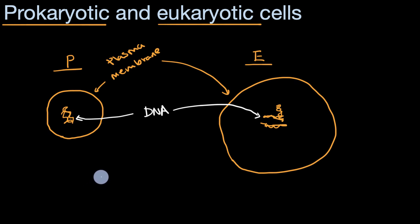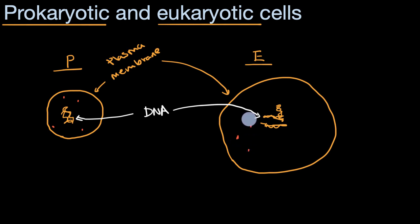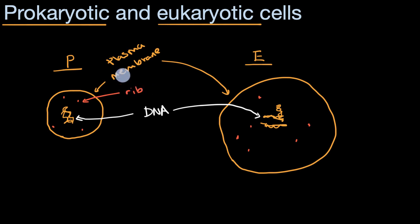They also will both have ribosomes. These are structures that build the cell's proteins — you'll learn more about that in the future. They tend to be very small compared to the cell itself. These are the ribosomes — that's where genetic information is used to construct proteins.